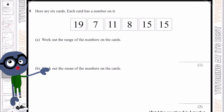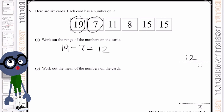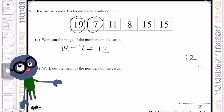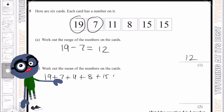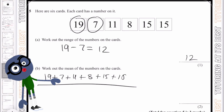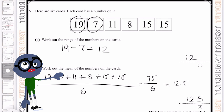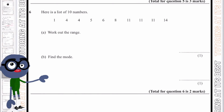Question five has six cards. The range is 19 take away 7, which gives us 12. For the mean, we add 19, 7, 11, 8, 15, and 15, which totals 75, then divide by 6, giving us 12.5.